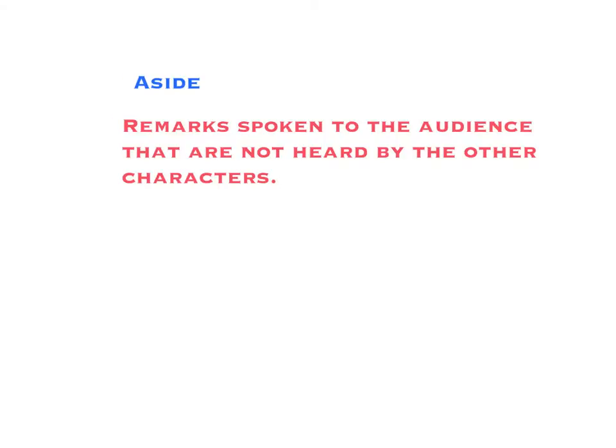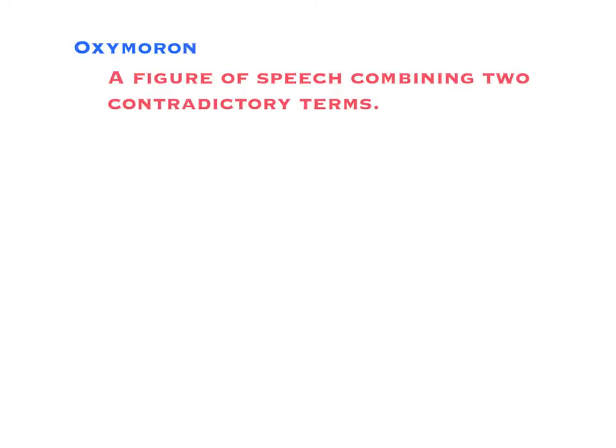The next word is aside. To understand the drama would be an example of an aside. The next word is oxymoron. Here is the definition. This video shows examples of oxymorons.